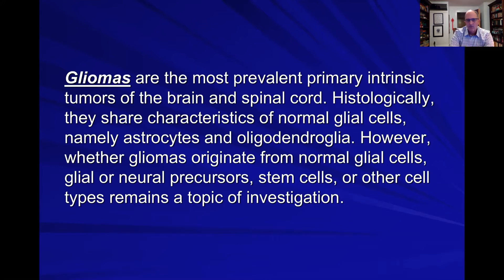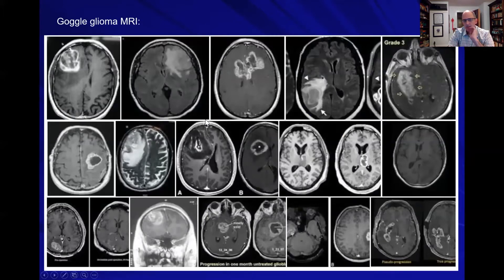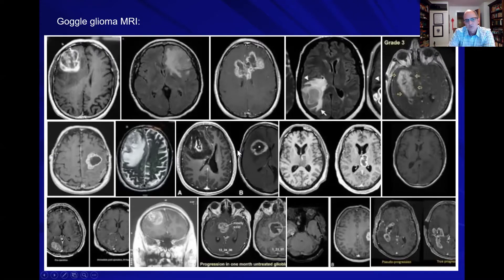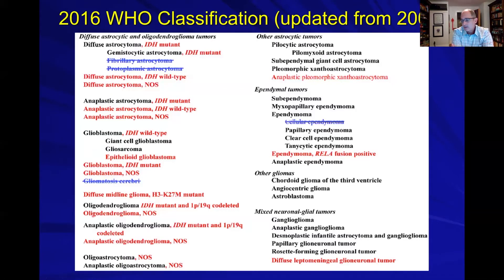If you quickly Google 'glioma MRI,' you'll get a sense of the diversity of tumors out there. The way they present clinically, the way they look radiographically, and the types of glioma are incredibly diverse. That's why we have colleagues who really focus just on gliomas and are truly glioma surgeons, because it takes a lot of focus and expertise to handle this category of tumors.